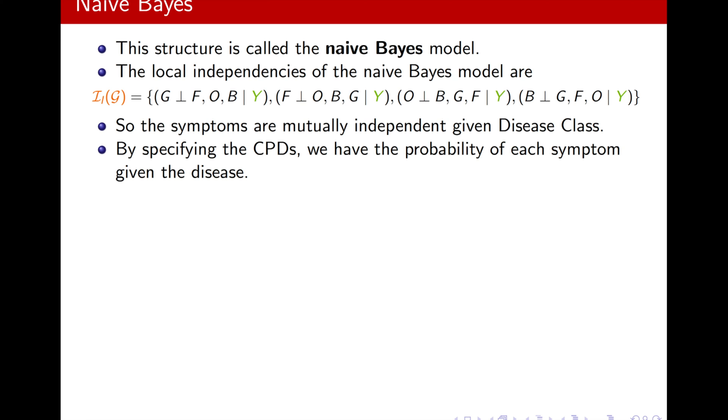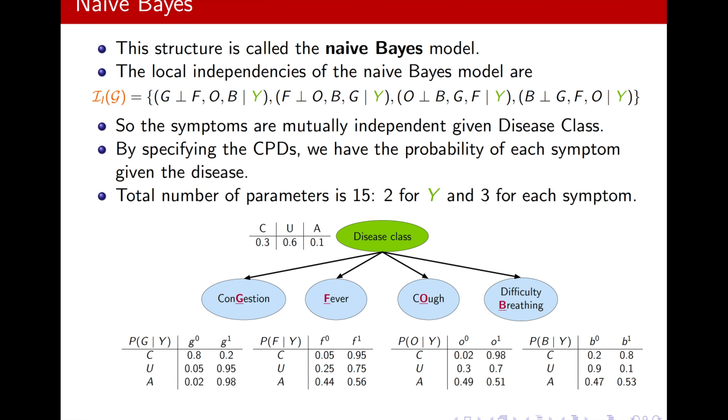Now, by specifying the CPDs, we have the probability of each symptom given the disease. So imagine that we somehow learn, estimate, or know these values. We will talk more about them in the next chapter.